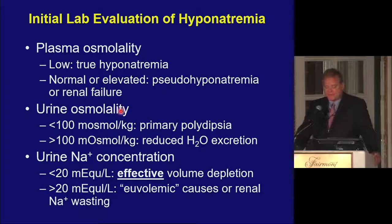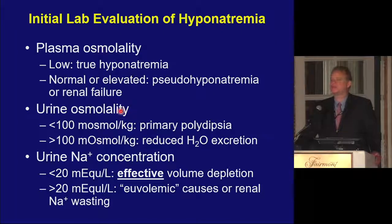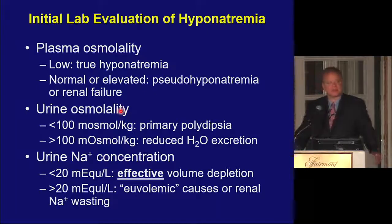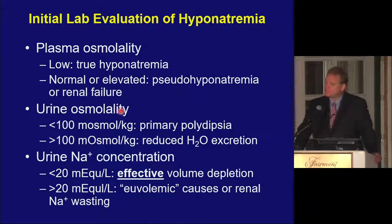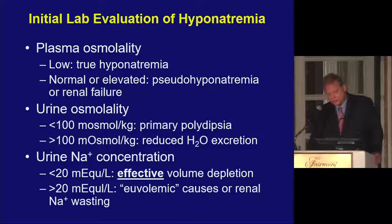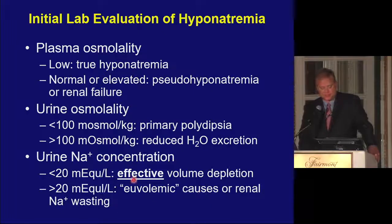The initial lab evaluation: you need a plasma osmolality — it's absolutely imperative in all cases of hyponatremia. You can still get pseudohyponatremia due to mostly high lipoproteins, for example lipoprotein X. You also want urine osmolality and urine sodium concentration at a minimum; I always also get urine chloride and potassium. If the urine sodium is less than 20, this suggests effective or true volume depletion. If it's greater than 20, this is a euvolemic cause of hyponatremia or renal sodium wasting.